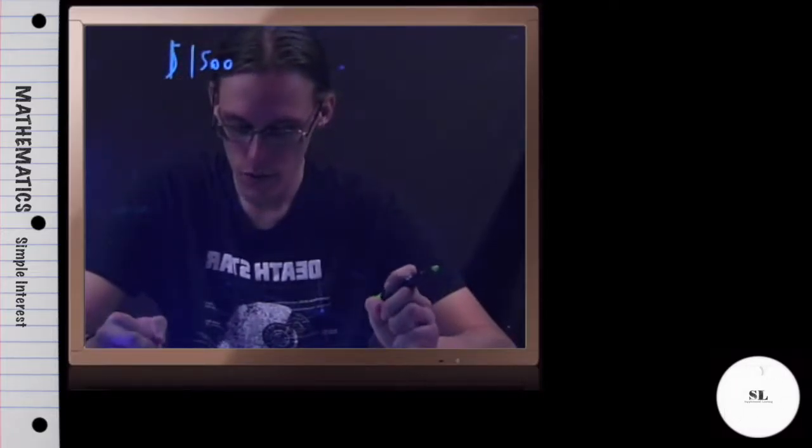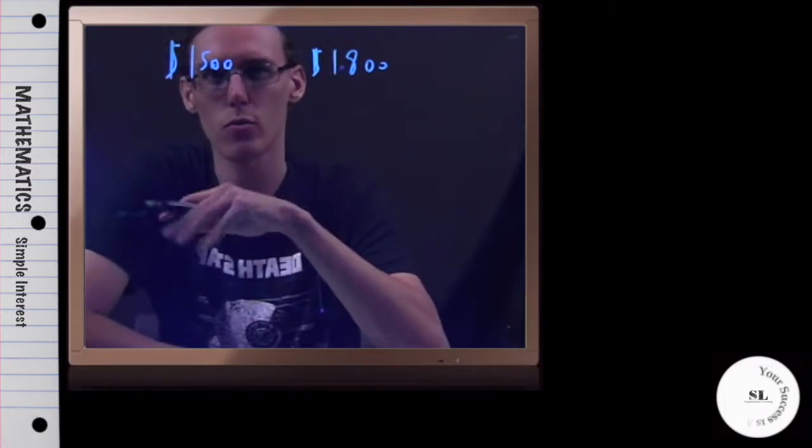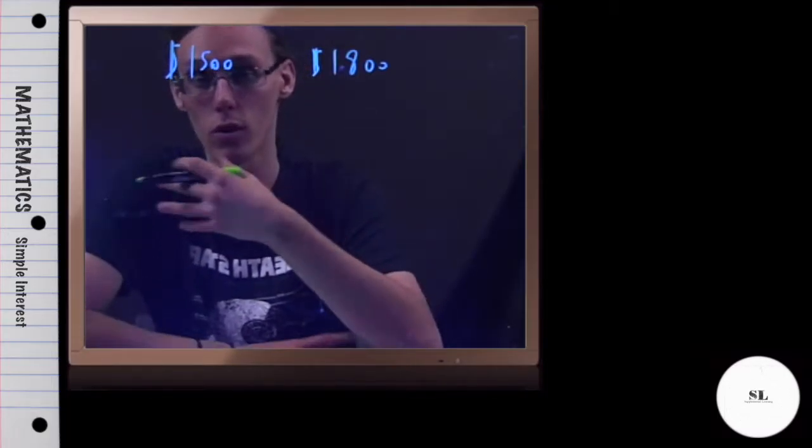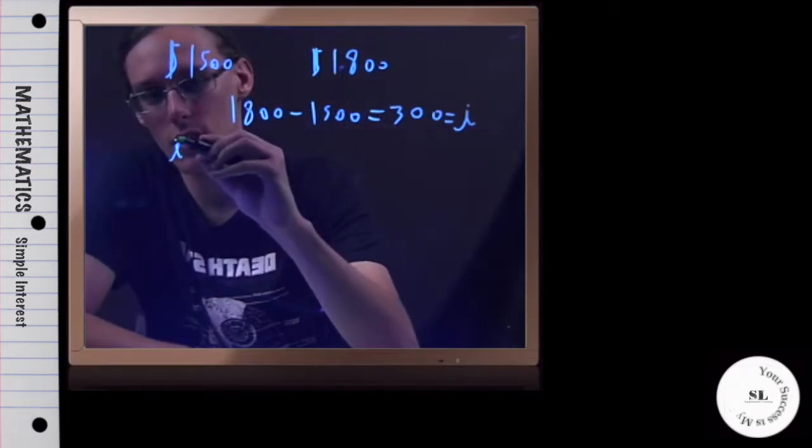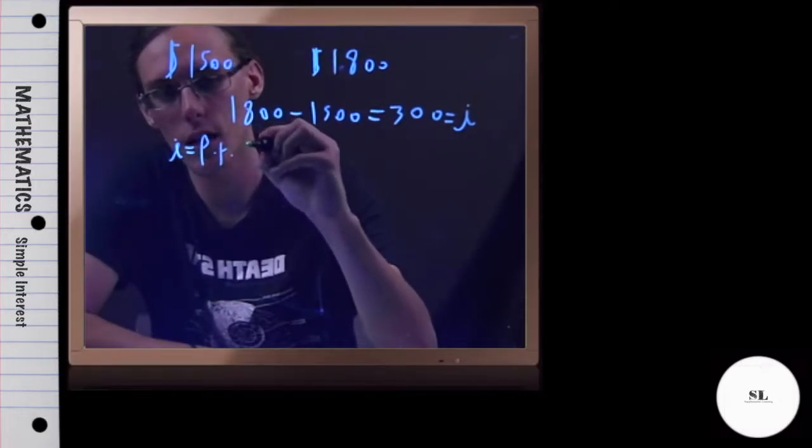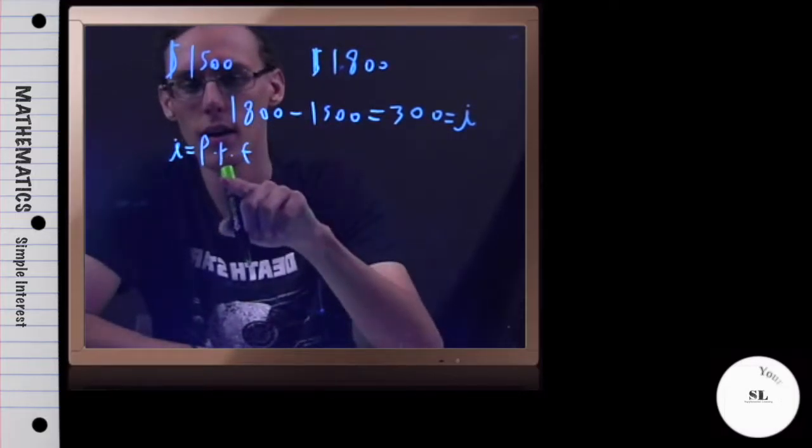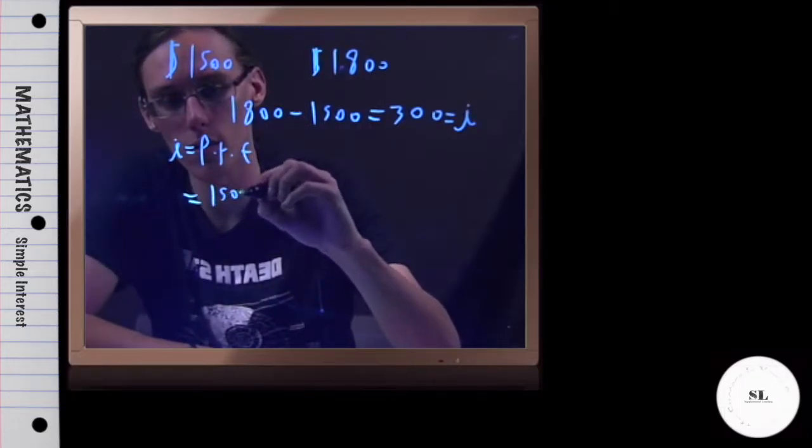In this example, we're told that we borrow $1,500 from a friend. I'm a math teacher, any time I see a number I'm going to put it up right away with no context. So $1,500 that we borrow from a friend and promise to pay back $1,800 in six months. What simple interest rate will you pay?